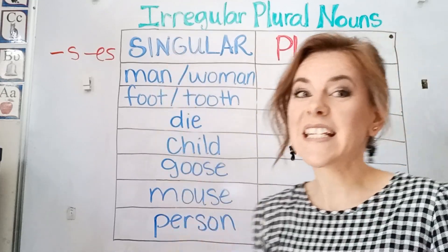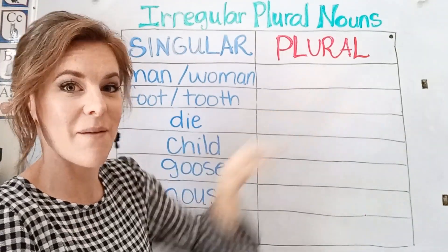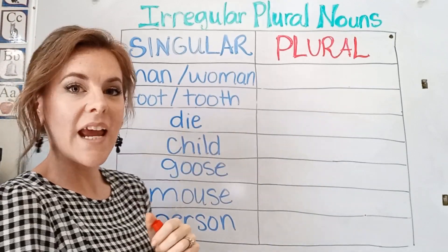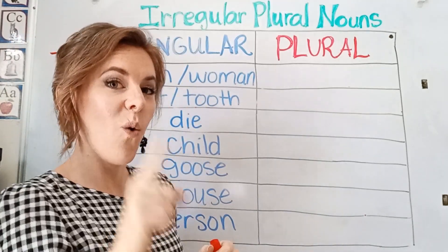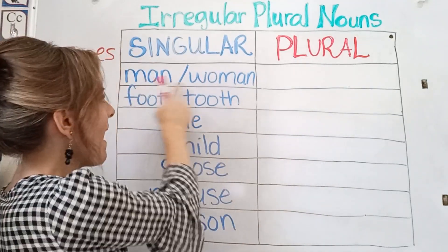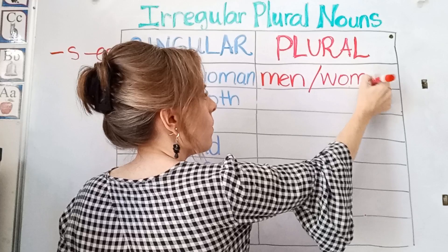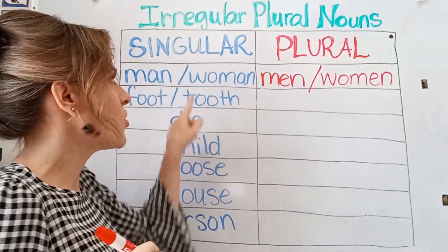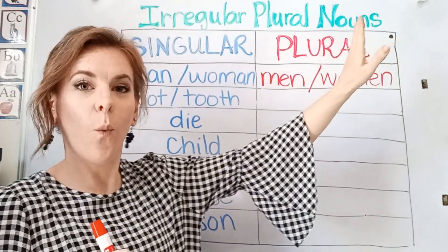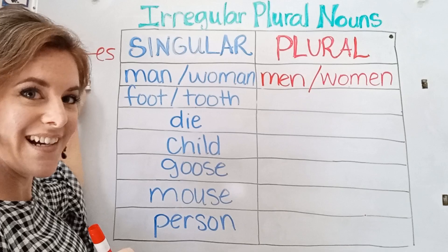Let's look at some singular words and change them into the plural form. Here we have man and woman — these are the singular words. One man, one woman. But if you're going to make these words plural, you change the A to an E: men, women. So one man, one woman becomes two or more men, two or more women. This is the plural form — it's irregular because we are not adding a simple S or ES.